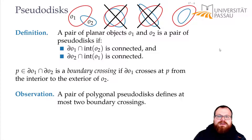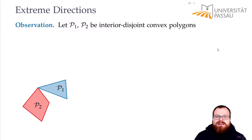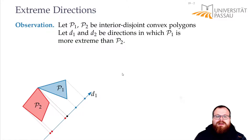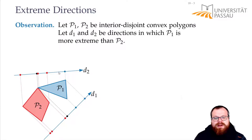Now we want to show that the configuration polygons we get are pairs of pseudodisks. For that, we first need a lemma about the extreme directions of convex polygons. Suppose we have two interior-disjoint convex polygons P1 and P2 in the plane. Then there is some direction D1 where P1 is more extreme than P2 — meaning the extreme point of their union in that direction is a point of P1.